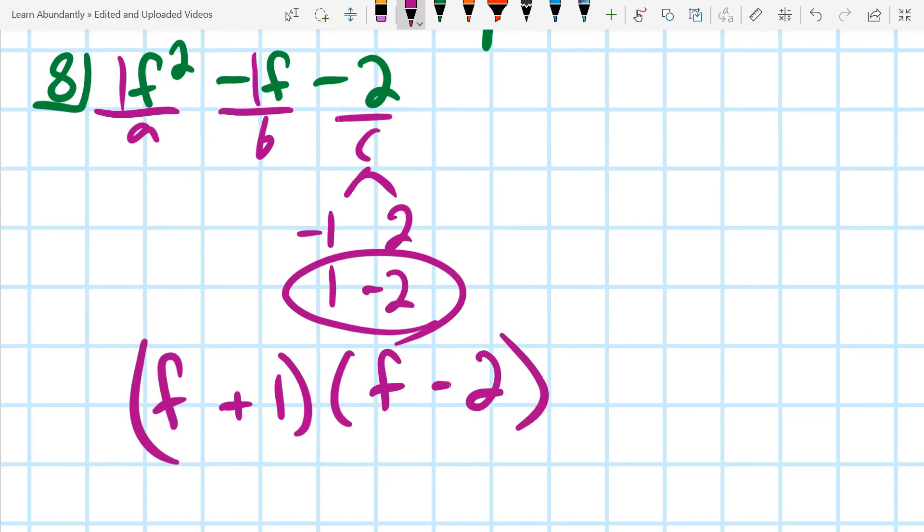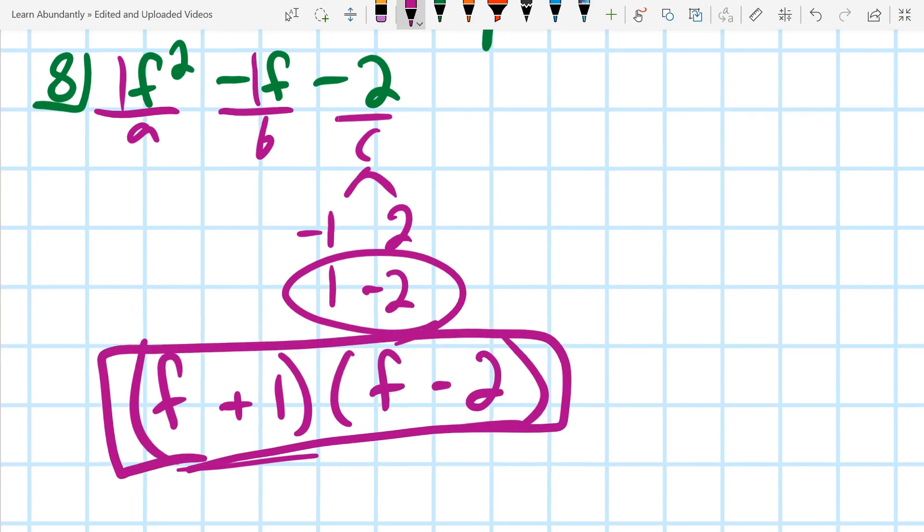One last point of clarity is that these two can go in either order. It doesn't matter which order they go in. So you could put f minus 2 times f plus 1 or vice versa. That is how you factor quadratics with a lead coefficient of 1.